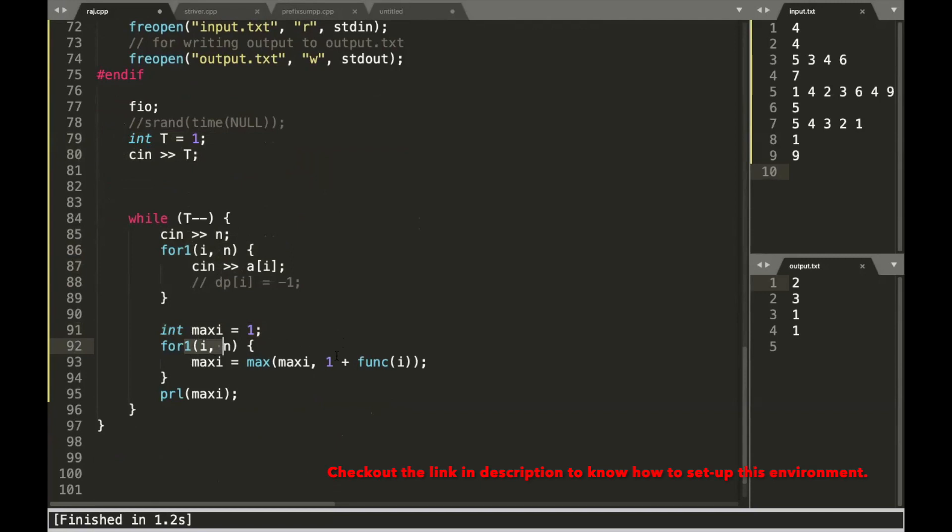And after that, I run a loop from one to n. So what I do is, I take the number itself. That means I'm taking him, one, and I call the function i.